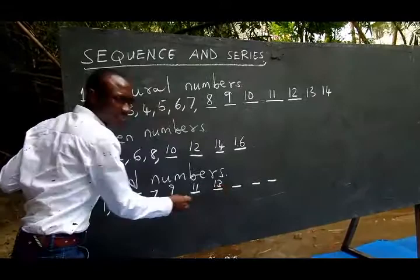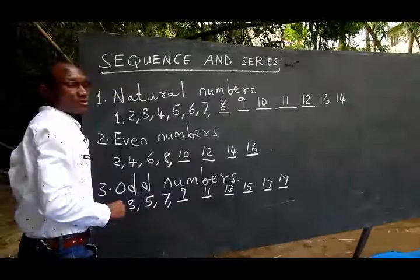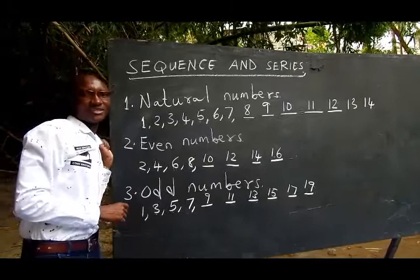11 plus 2, we get 13. 13 plus 2, we get 15. 15 plus 2, we get 17. 17 plus 2, we get 19, 21, 23, 25, 27, 29, 31, 33, 35, 37, 39, and so on, my best friend.